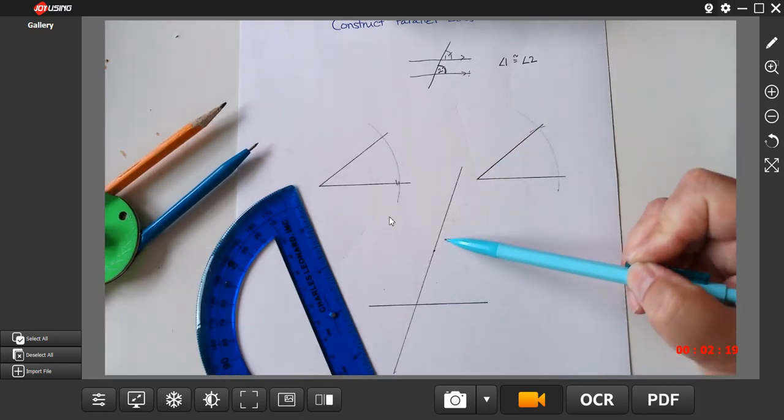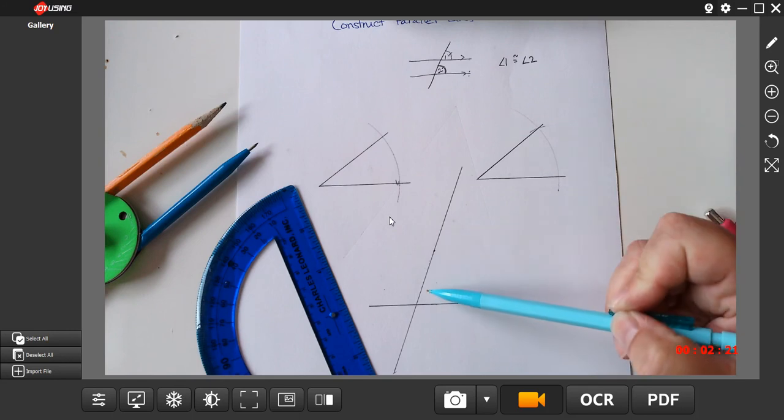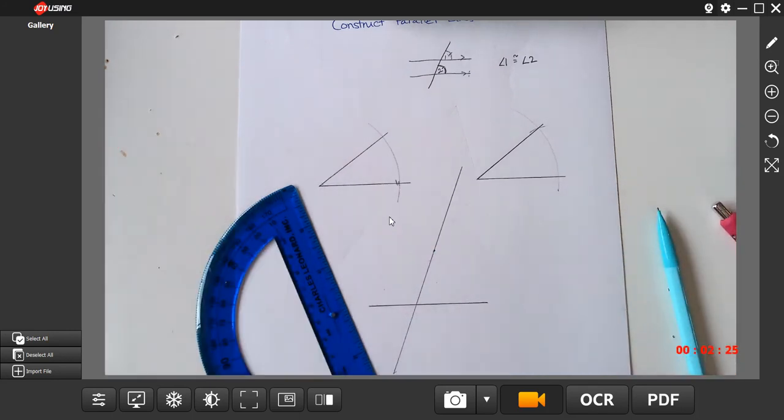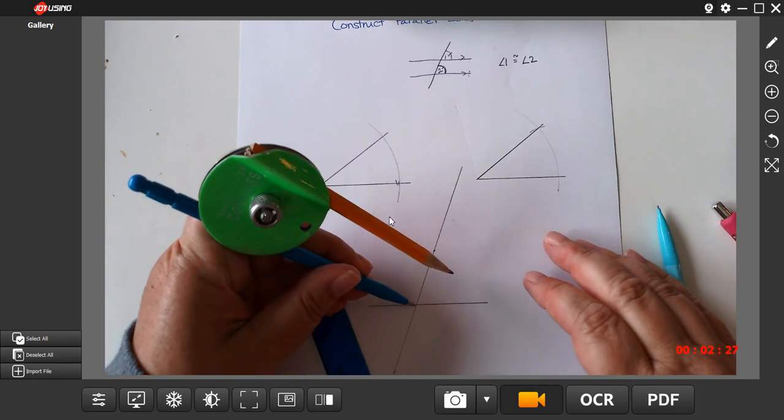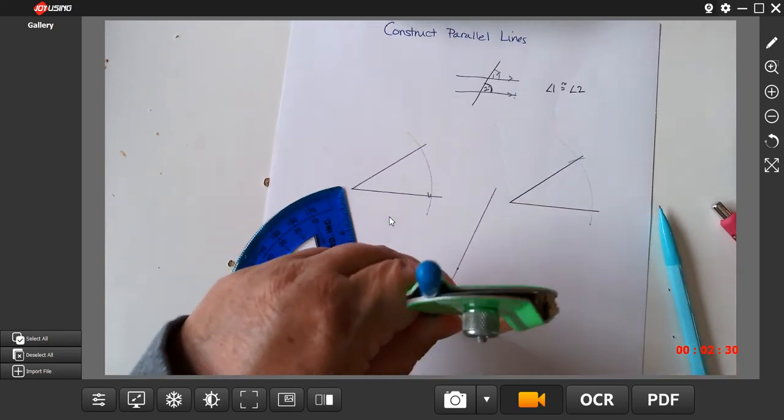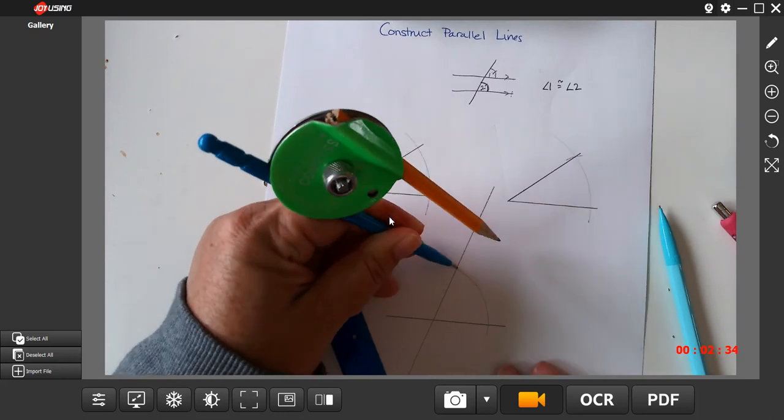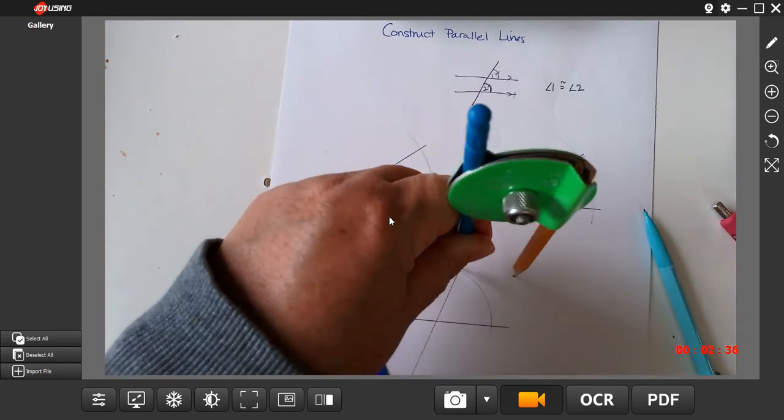This is the angle that I'm going to copy up here. So here's my angle. I already have my starter array. So I'm going to make an arc across my angle, my original angle. So I put my point on my vertex, draw the arc. Now I'm going to go up here to this point. This is my new vertex. I'm going to draw that arc again.